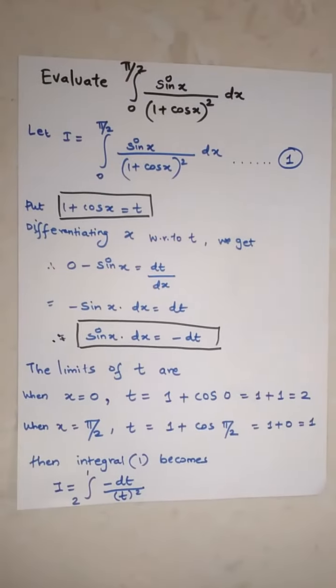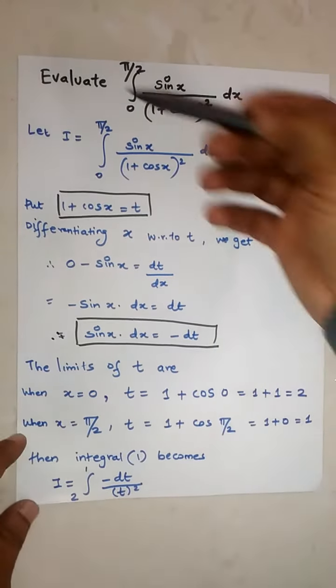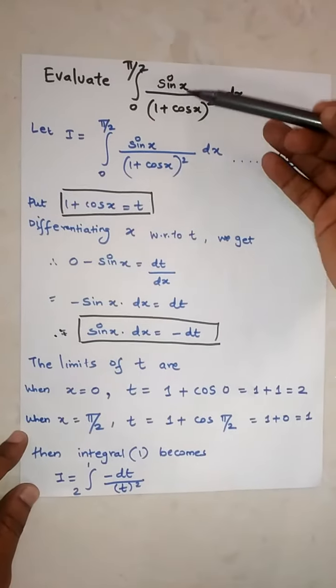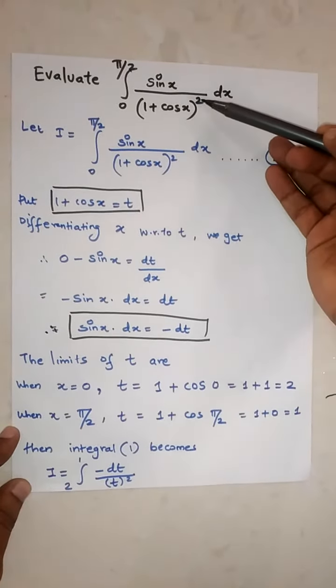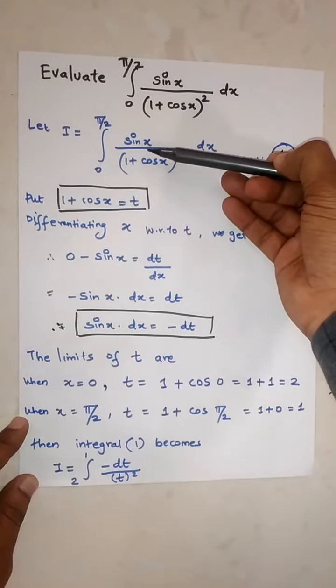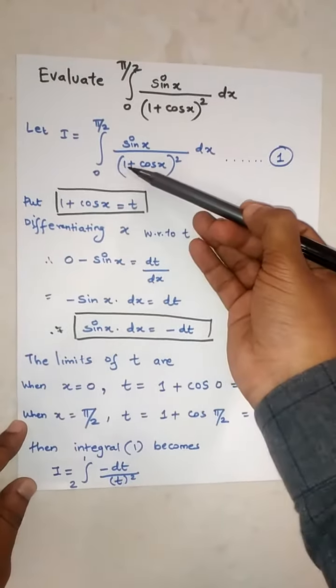Hello friends, in this topic on definite integration, we evaluate the integral from 0 to π/2 of sin x over (1 + cos x)² dx. Let I equal this integral. We put the denominator 1 + cos x equal to t, and differentiate with respect to x.